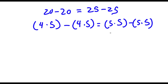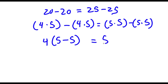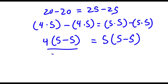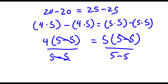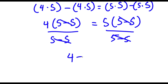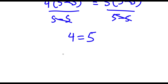Now this is the same thing as 4 times (5 minus 5) — I factored out 4 because both terms were being multiplied by 4. And this is the same thing as 5 times (5 minus 5) — I factored out 5 because 5 is being multiplied by both terms. So now what I'm going to do is divide both sides by (5 minus 5). These two cancel out and these two cancel out, and I'm left with 4 is equal to 5. Now 4 is the same thing as 2 plus 2, so I have 2 plus 2 is equal to 5. And there it is — I just proved that 2 plus 2 equals 5.